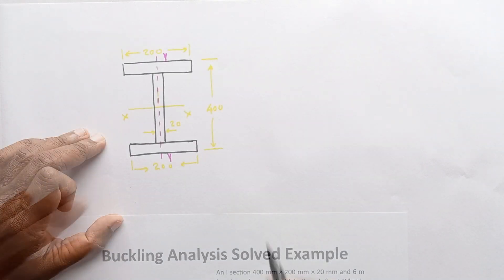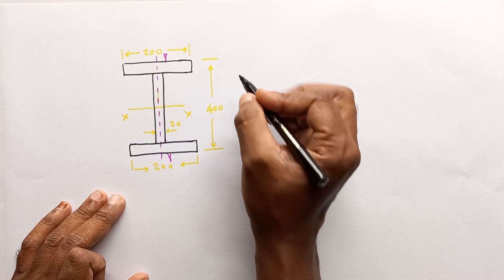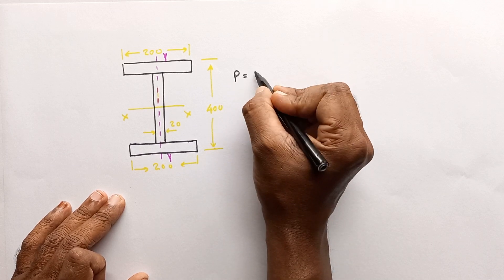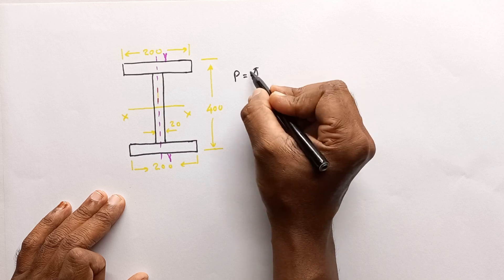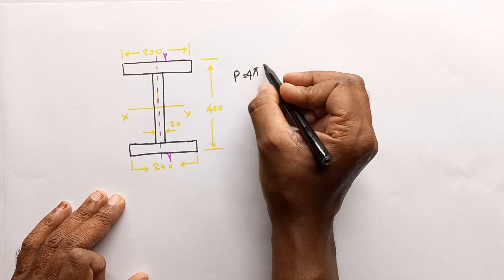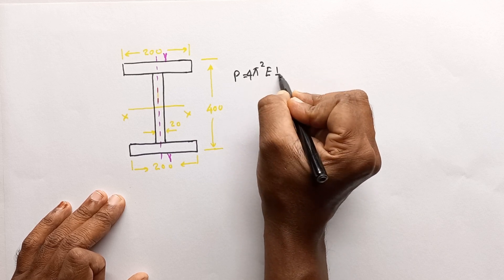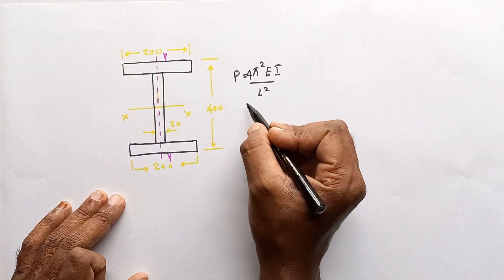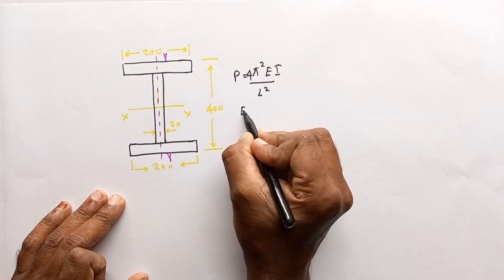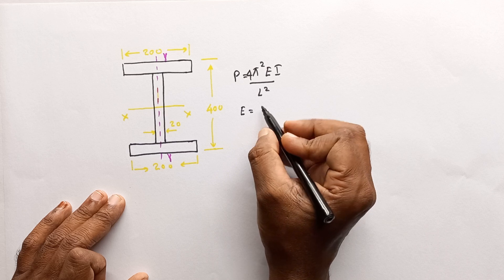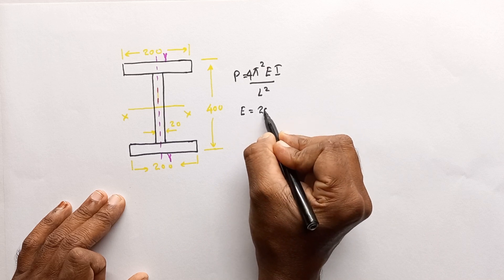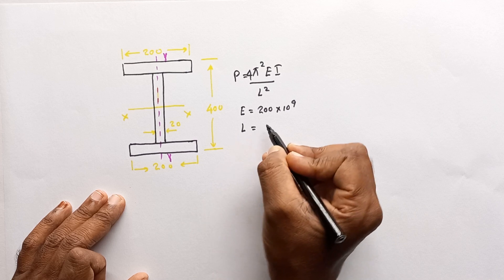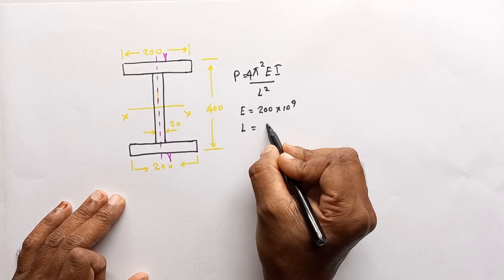For this problem the buckling load is given by the equation 4π²EI / L². In this equation the elastic modulus E is given as 200 gigapascal, that is 200 × 10⁹. The length of the column is also given, equal to 6 meters.